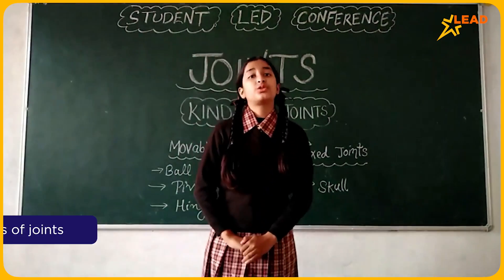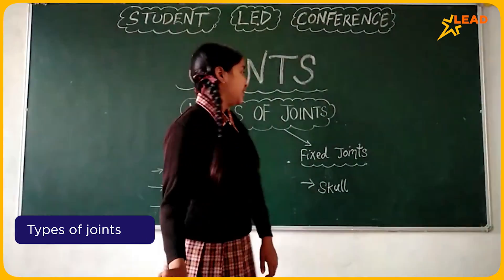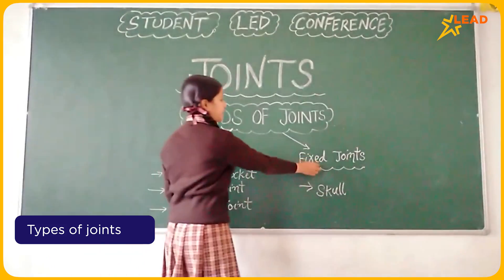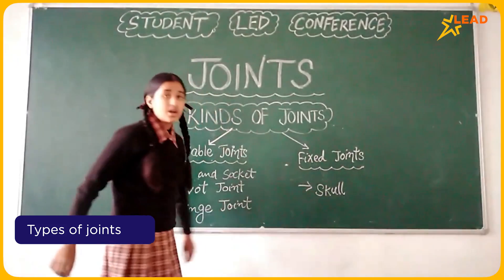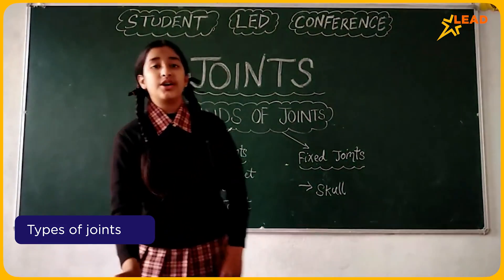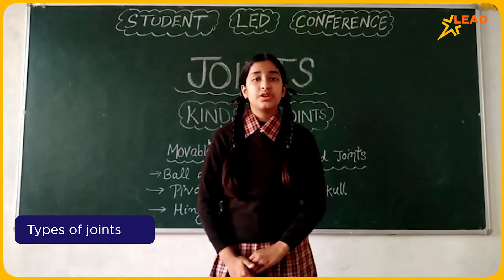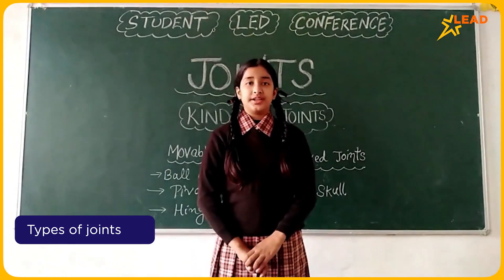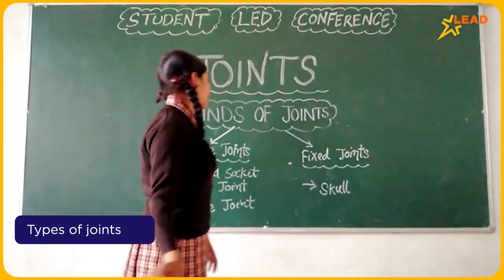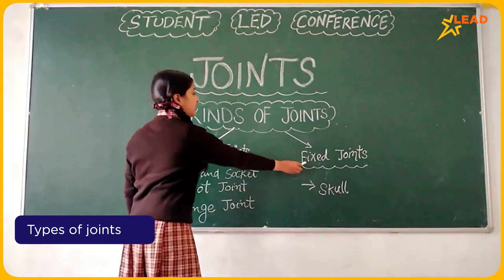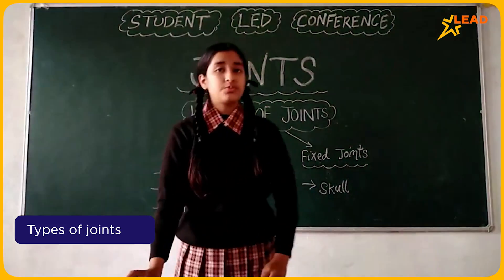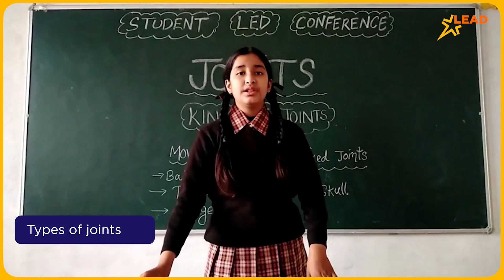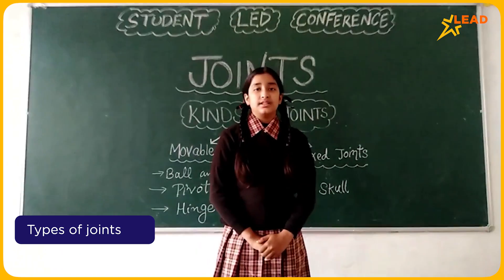There are two types of joints in our body: moveable joints and fixed joints. Moveable joints help us to move — for example, the elbow joint and knee joint. Fixed joints do not move but give stability to our body — for example, the bones of the skull.